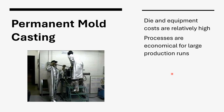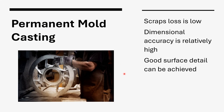In permanent mold casting, die and equipment costs are very high because you can repeatedly use them for a higher production rate. When made of metal, gases don't escape into your product. Processes are economical for large production runs. Scrap loss is low, dimensional accuracy is very high, and you can achieve good surface detail.